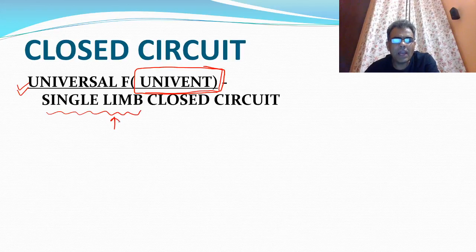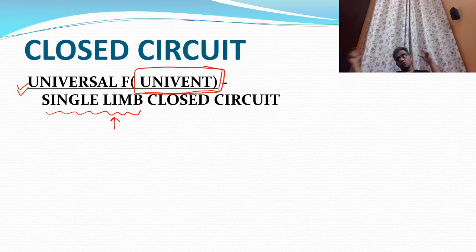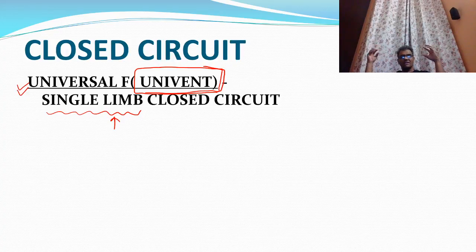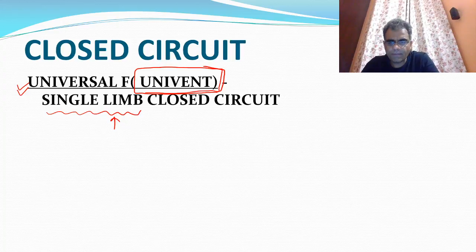The Universal F or Univent is a single limb closed circuit. This avoids the cumbersomeness of the regular closed circuit which has two big tubings and a large canister. The Univent makes it a single limb, making it less cumbersome.